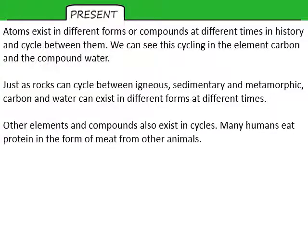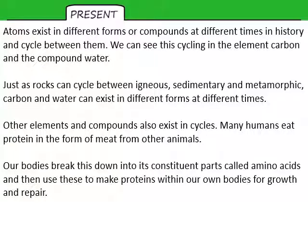Other elements and compounds can also exist in cycles. For example, many humans eat protein in the form of meat from other animals. Our bodies then break down this protein into its constituent parts, which are called amino acids, and we then use these to make proteins within our own bodies for growth and repair.